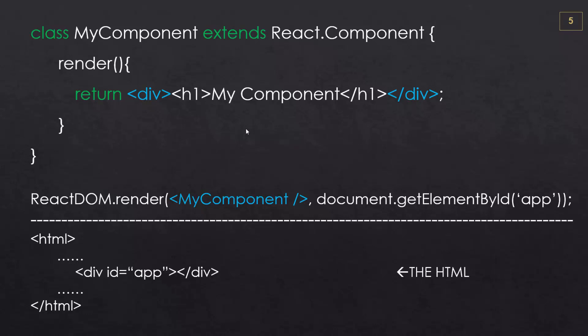When you return markup like this, this is actually JSX — it's not HTML, it's an XML-like syntax that runs within JavaScript. There are a couple of differences; for instance, you can't use the class attribute on elements, you have to use className. Same thing with the for attribute — you can't use that, you have to use htmlFor. So there are just a couple of minimal differences in the syntax.